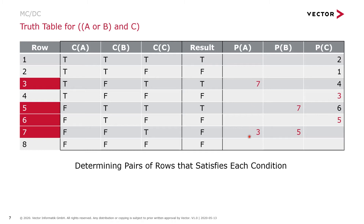For condition A, rows 3 and 7 satisfy this — condition A changes, condition B and condition C remain the same, and the result changes. For condition B, there are rows where condition B changes, the other two conditions remain the same, and the result changes. And we have many rows that satisfy condition C. By combining the selected rows and eliminating duplicates, we write test cases for each row selected.